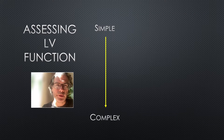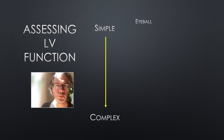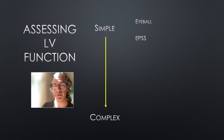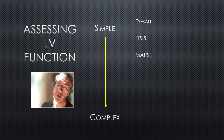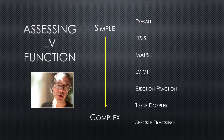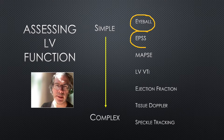There are various ways to assess LV function ranging from relatively simple to more complex. We've talked about the eyeballing method — looking at how much the walls move in towards the middle of the chamber and how much they thicken during systole. EPSS stands for E-point septal separation and refers to the gap between the anterior mitral valve leaflet and the septum. MAPSE is mitral annular plane systolic excursion, which uses M-mode to measure longitudinal function. LV VTI — velocity time integral — will be discussed later. For now we'll focus on the eyeball method and EPSS.